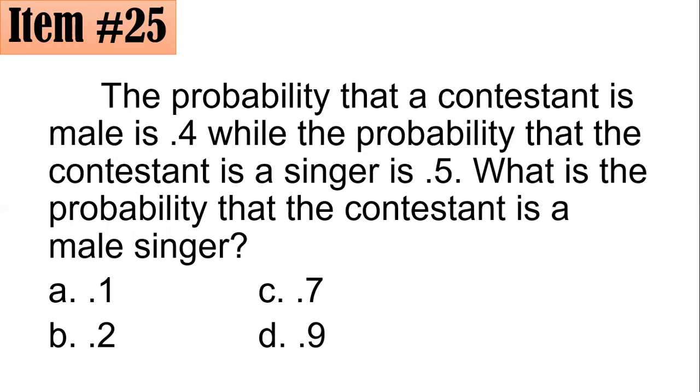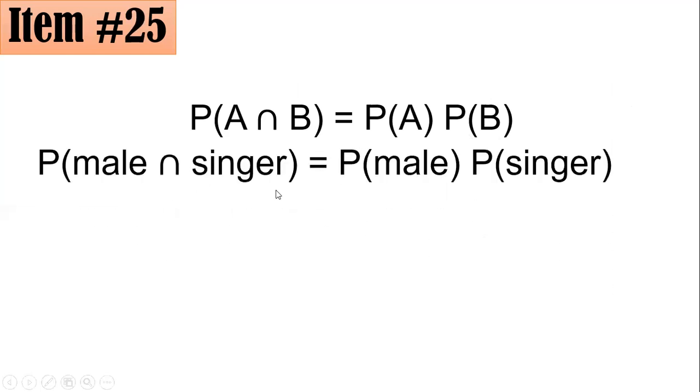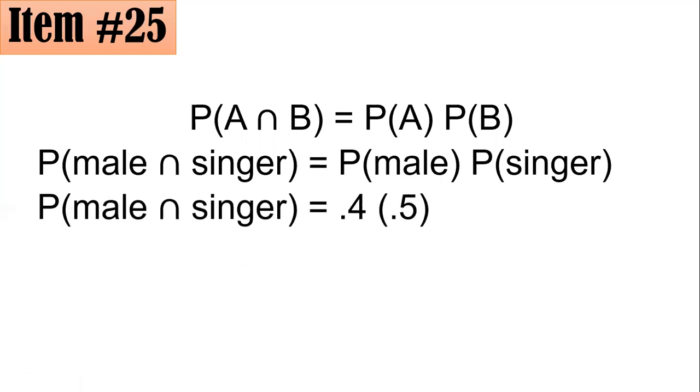So from here, it says this is in fact the probability of having the intersection, of having both characteristics of being male and a singer at the same time. So that's the probability of the intersection of two events. And if you have the probability of the intersection of two events, it's simply the product of the probability of the first event multiplied by the probability of the second event. So the first event is being male, and the second event is being singer. So the probability of having a male singer is the probability of being male times the probability of being a singer, which is 0.4 times 0.5, or that's 0.2.